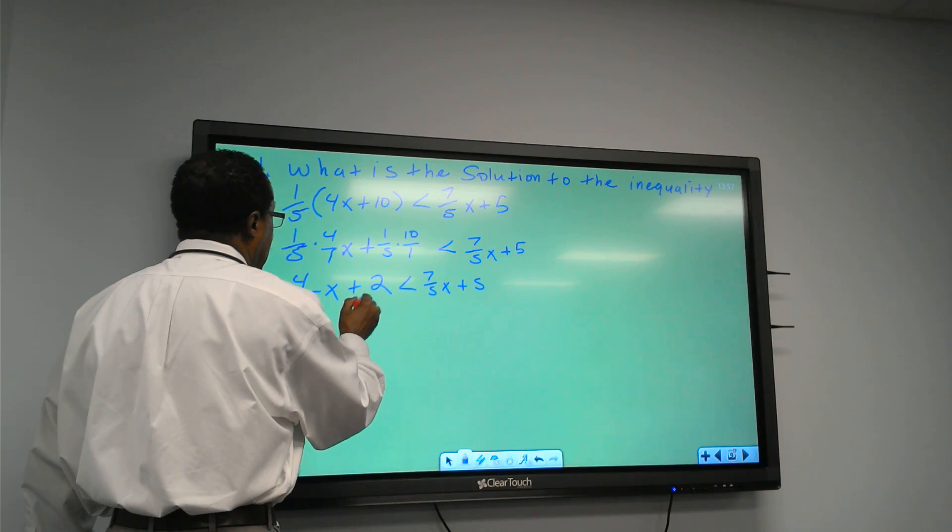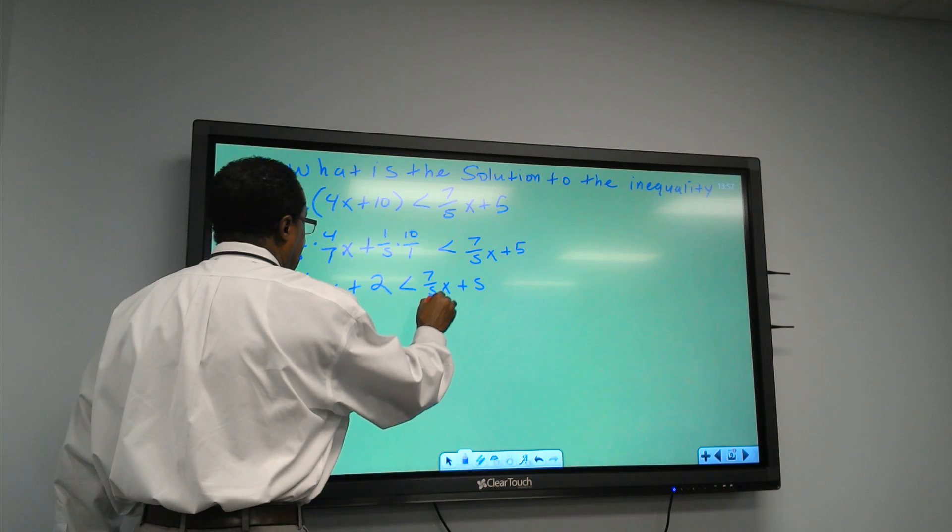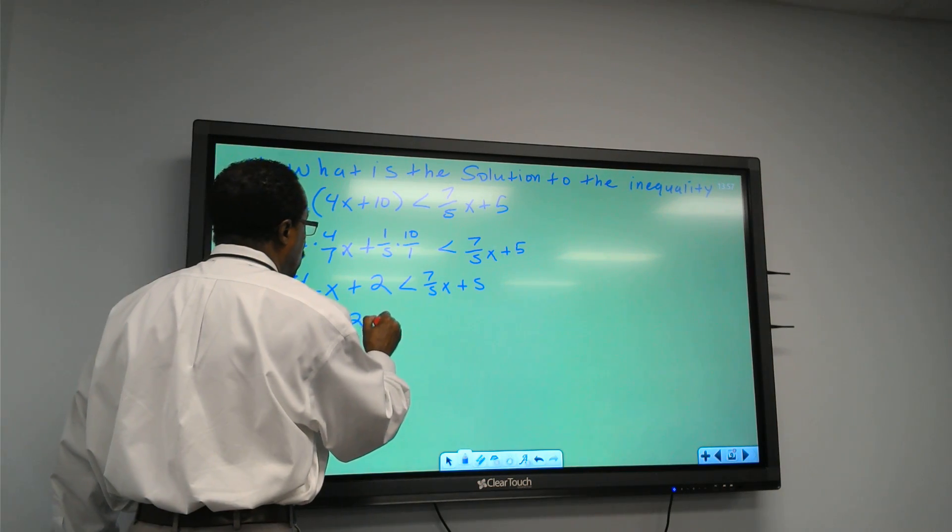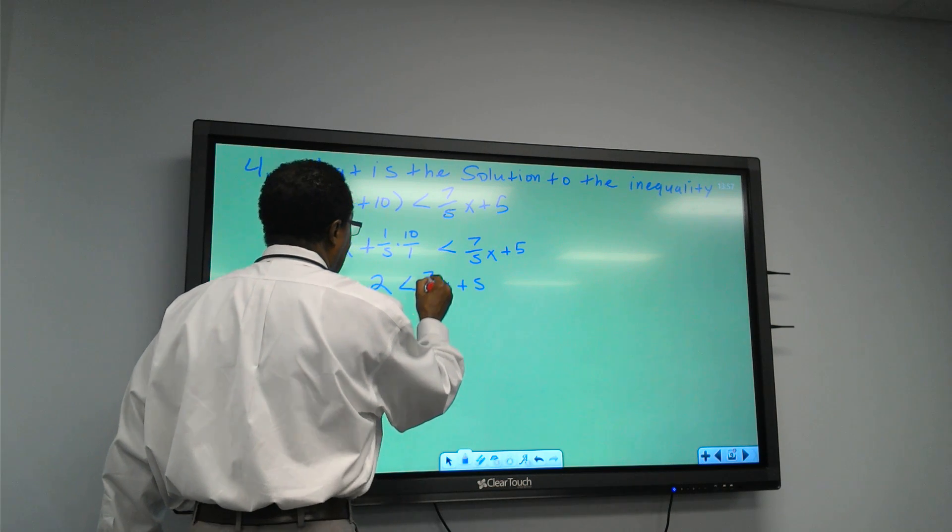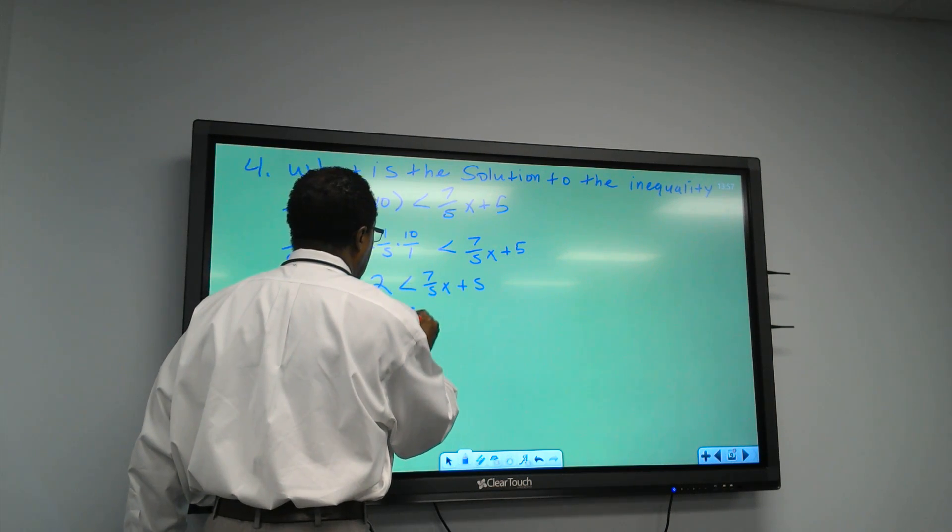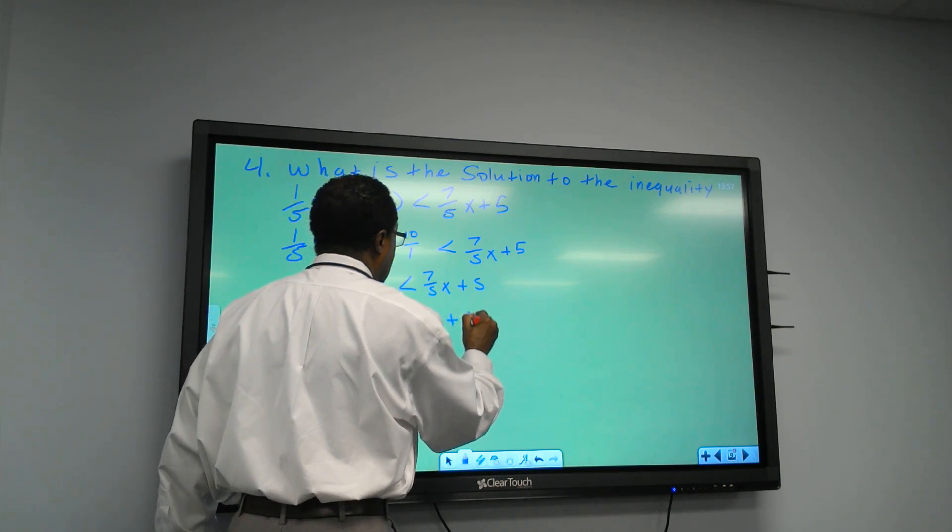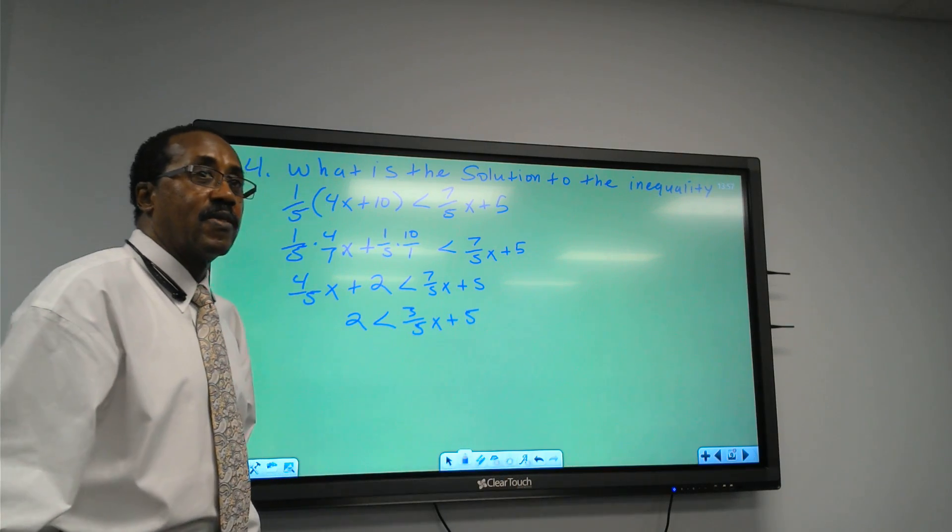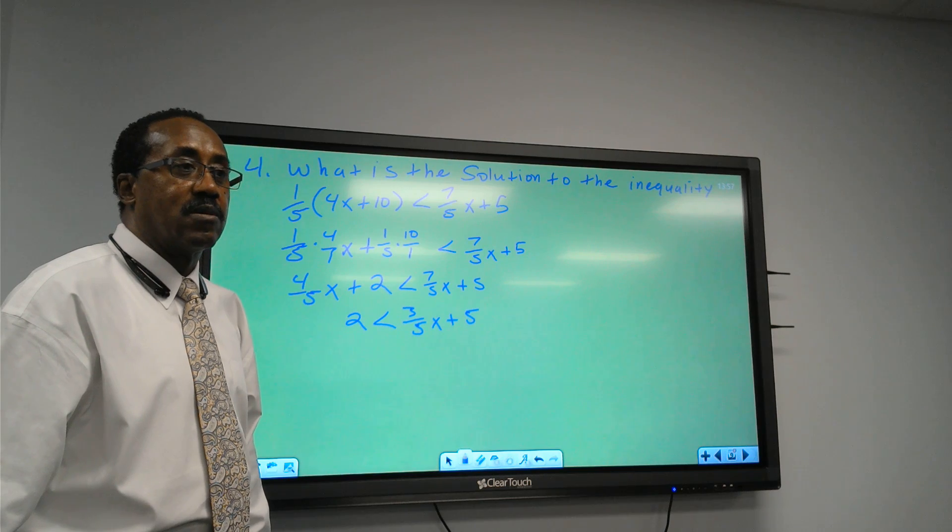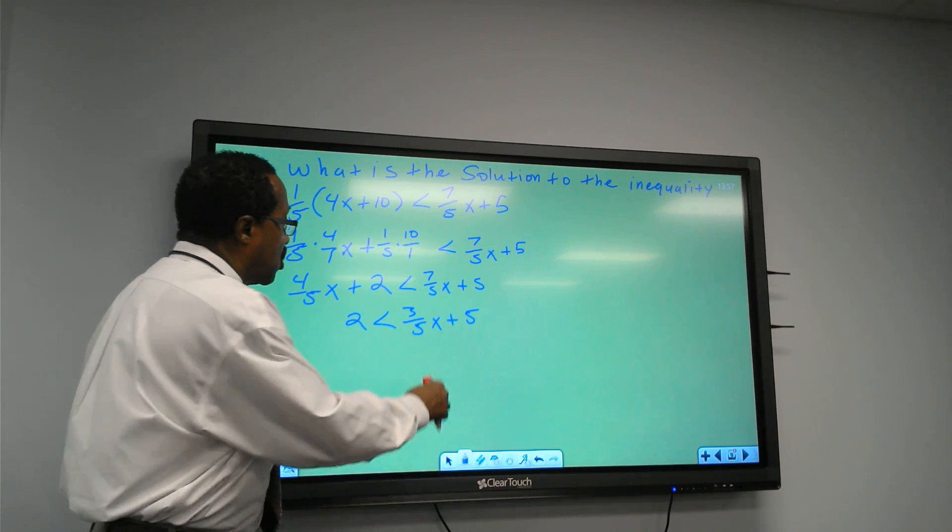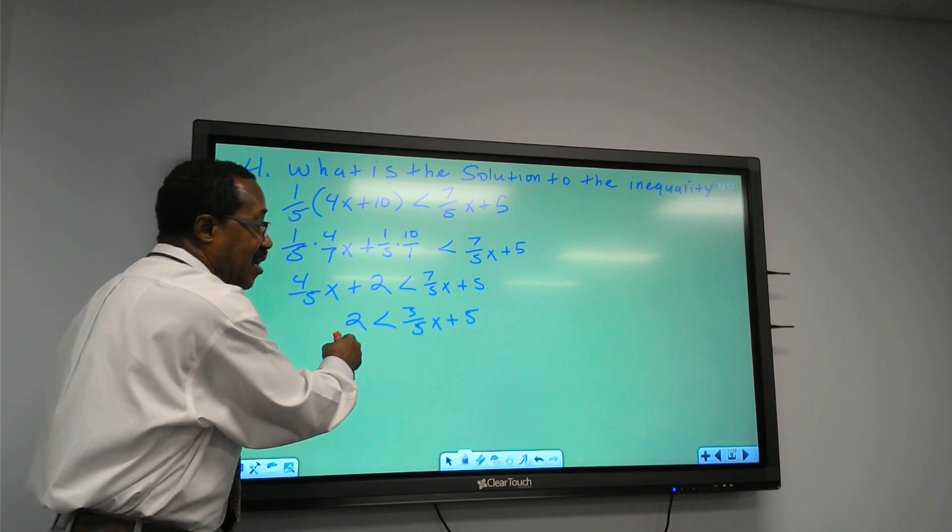So now let's take, still subtract this from this side. That's going to give me 2 is less than, and then 4 from 7 is 3 over 5x plus 5. Are we straight?